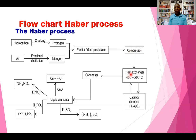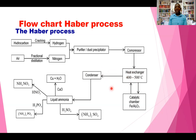When the gases have been compressed, they are taken to the heat exchanger, where they are heated to a temperature of 400 to 500 degrees Celsius. The hot gases are then taken to the catalytic chamber, which contains iron mixed with aluminum oxide. The reaction occurs here to produce ammonia gas. The ammonia gas is taken back to the heat exchanger, where it is cooled slightly, and then taken to the condenser, where it is cooled further and condensed to form liquid ammonia — since ammonia is highly volatile, it is produced in gaseous form and condensed in the condenser.